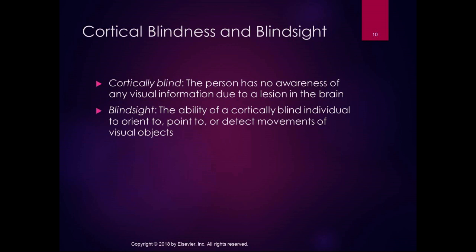Blindsight is a phenomenon where a person with no awareness of visual information can still orient, point to, or detect movements of visual objects. It is considered a compensatory mechanism — signals are arriving somewhere but not reaching the primary visual cortex. Research suggests blindsight is contingent on intact function of the retina and pathways from the retina to the lateral geniculate nucleus, allowing some processing in the thalamus. In the next section, we will talk about eye movements.